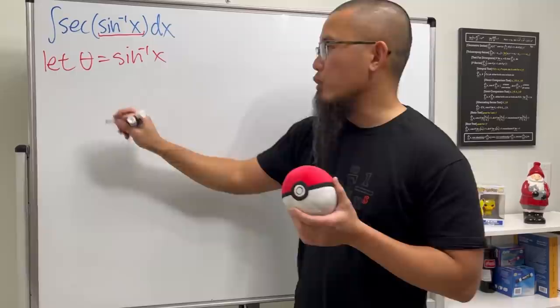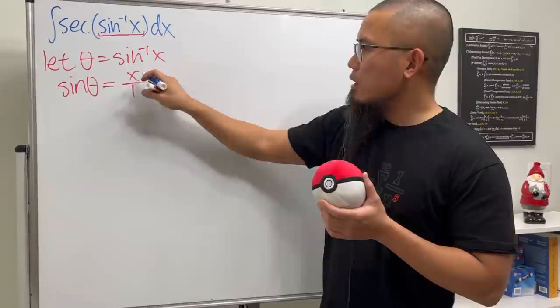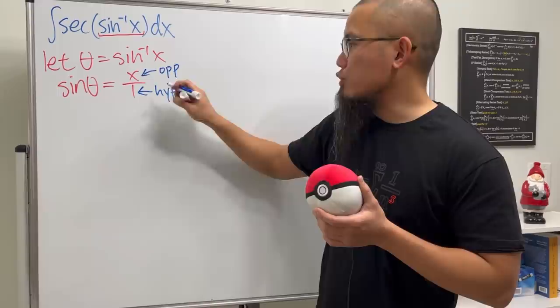So you can say that theta equals that, and then we can just take the original sine on both sides. So this means we get sin theta being equal to x, which is the same as x over 1. And right here because we're talking about sine, this means we have the opposite over hypotenuse from the right triangle.